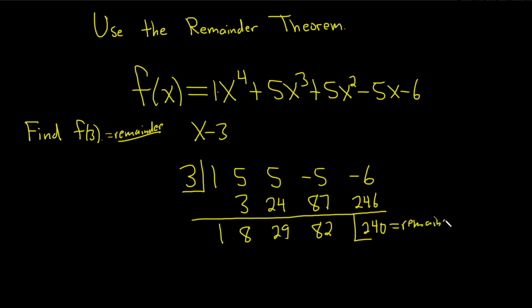This is the remainder. And the remainder theorem says that when you divide by x minus 3, the remainder is f of 3. So f of 3 is equal to 240. And that's it. So that's how you use the remainder theorem to find a function value. I hope this video has been helpful.